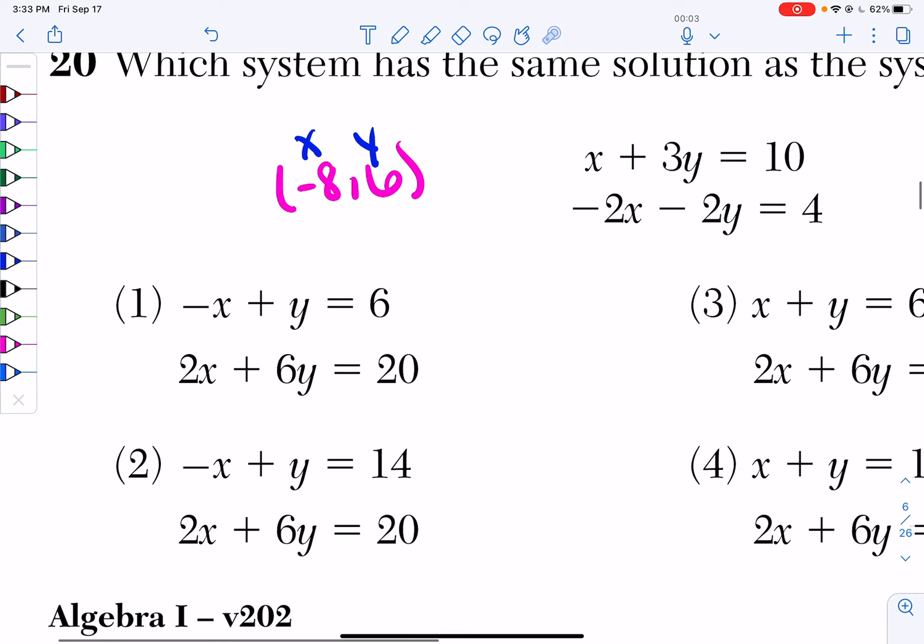So I look at this first equation. I have negative negative 8 plus 6 equals 6. Well, negative negative 8 is 8, and 8 plus 6 is 14. 14 is not equal to 6, so it can't be choice 1. So I'm not even going to bother testing this equation because I know it's not going to matter because it doesn't work for the first one.